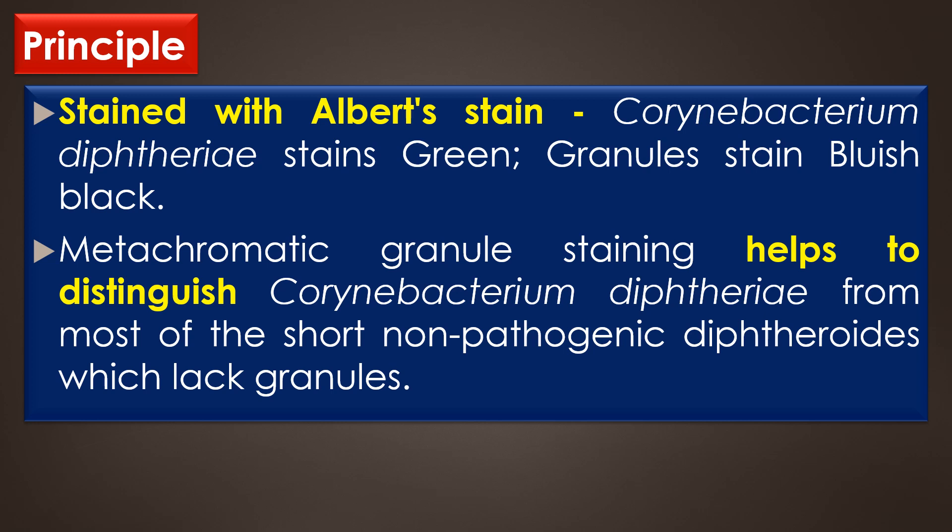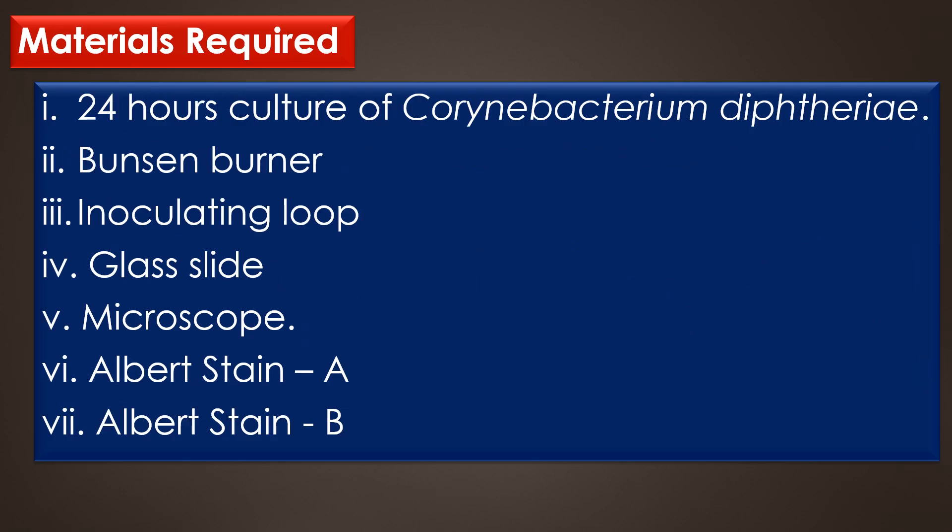Metachromatic granule staining also helps to distinguish Corynebacterium diphtheriae from most of the short non-pathogenic diphtheroids which lack the metachromatic granules. The materials required for metachromatic granule staining are a 24-hour culture of Corynebacterium diphtheriae, Bunsen burner, inoculation loop, glass slide, microscope, Albert stain A and Albert stain B.